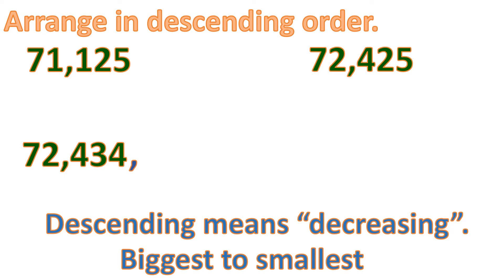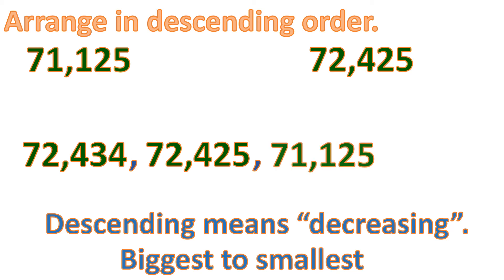Then we will compare the remaining numbers. Comparing from left to right, they have the same values in the 10,000th place, so we compare the 1,000th place. The bigger number among these two is 72,425. Then we write the remaining number. So this is descending order from biggest to smallest.